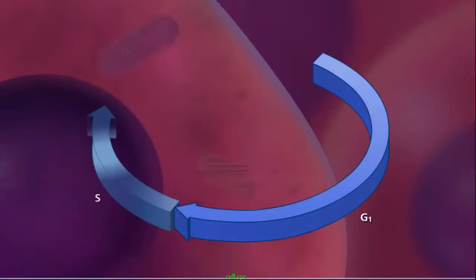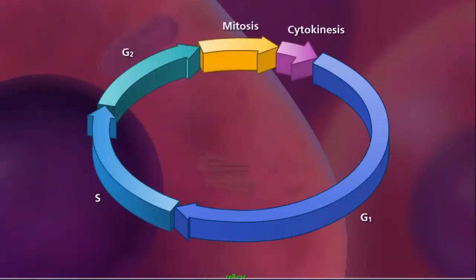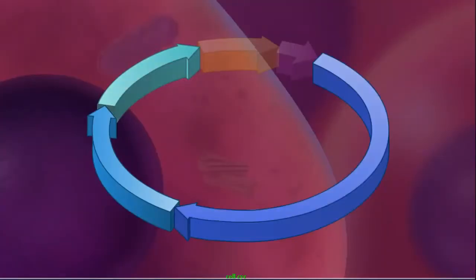The replication of DNA and the formation of sister chromatids is one part of the entire cell cycle. To prepare for cell division, the cell goes through interphase, which can be divided into three distinct phases.